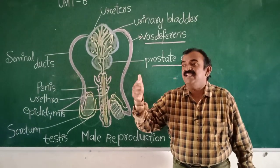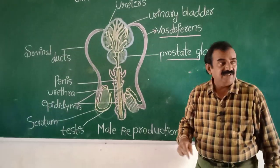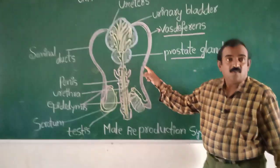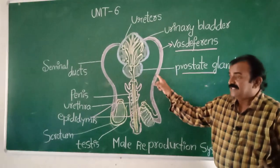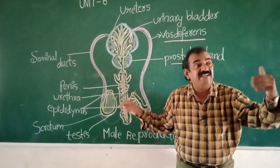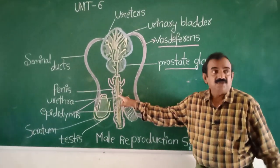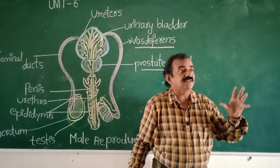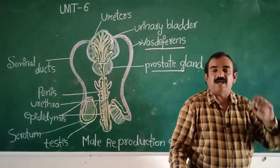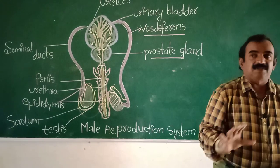Next: the ejaculatory duct. Two ejaculatory ducts are present, arising from the seminal vesicles. They join the prostate gland and form ducts that open into the urethra. The two ducts open at the center of the urethra. That completes the parts of the male reproductive system.